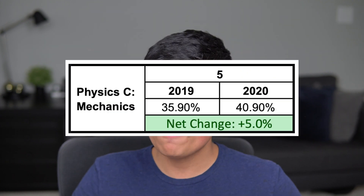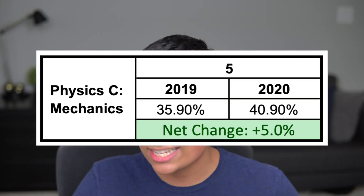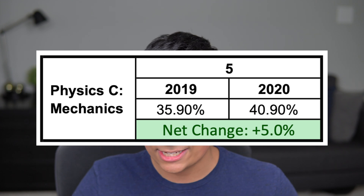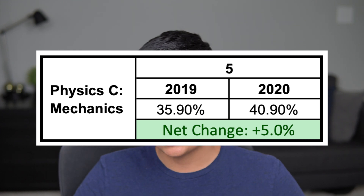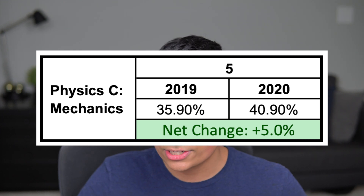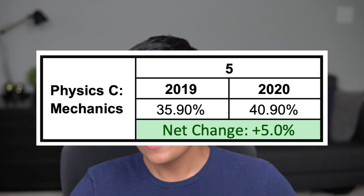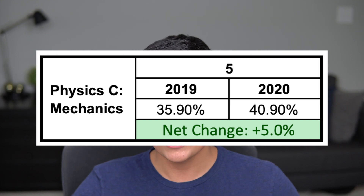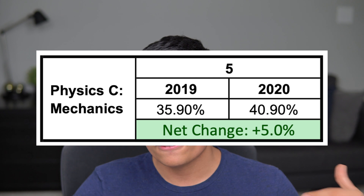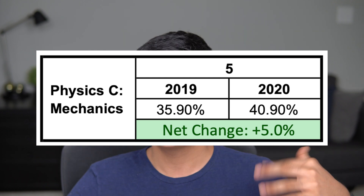A pretty strong success was AP Physics C Mechanics, as well as AP Physics C Electricity and Magnetism. Physics C Mechanics actually increased by almost 5%, meaning the number of students who scored a five on that exam increased by 5% from 2019 to this year — a major improvement for that particular exam.